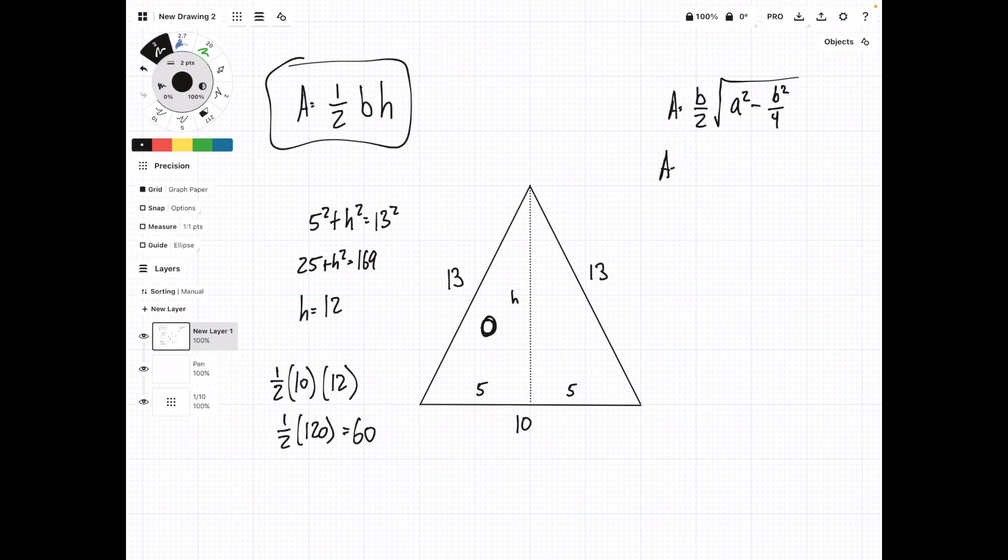Now if we come over here, for our formula, a is the side length, which is gonna be 13, and b, so I can put this here, b is the base. So instead of trying to figure out what the height is, we're just gonna plug in values. So it's gonna be 10 over 2 times the square root of 13 squared minus 10 squared over 4.